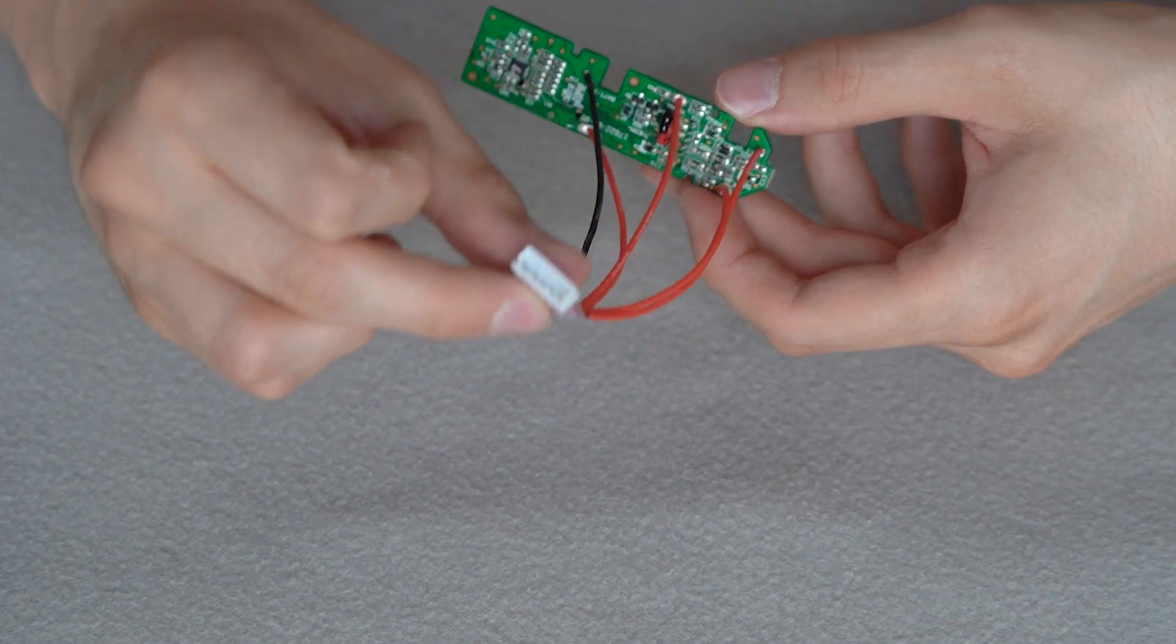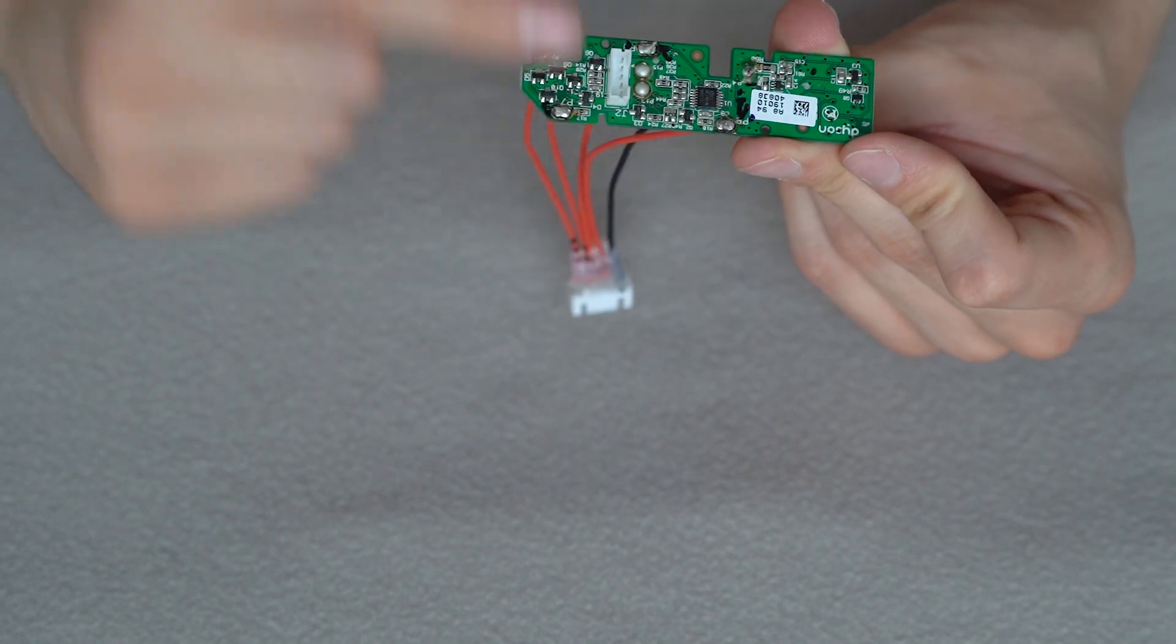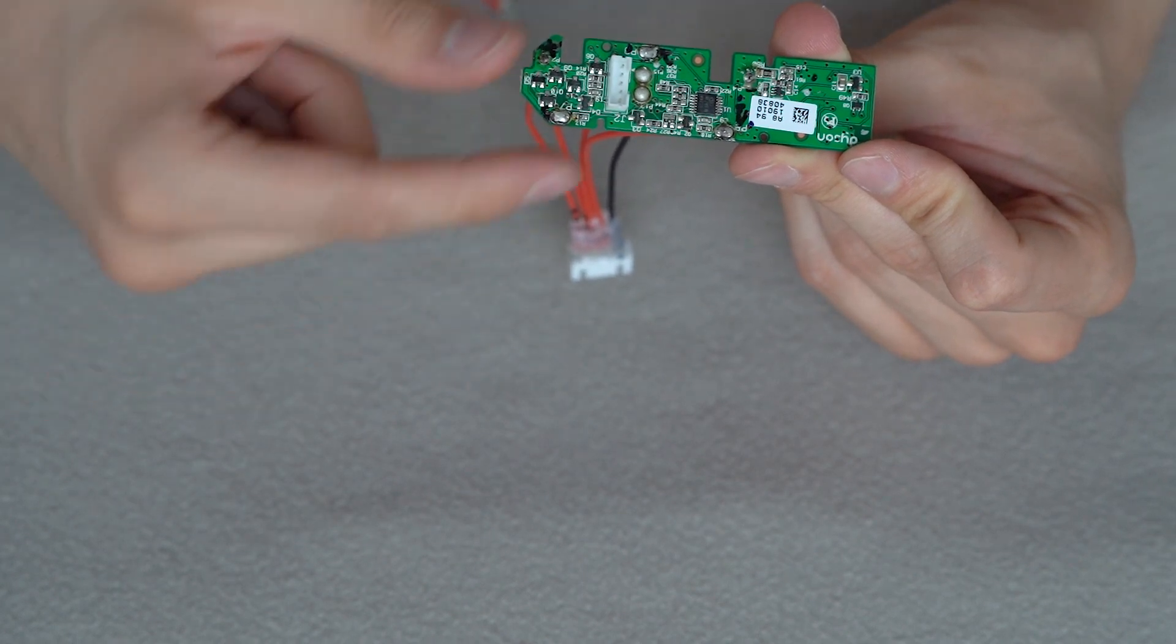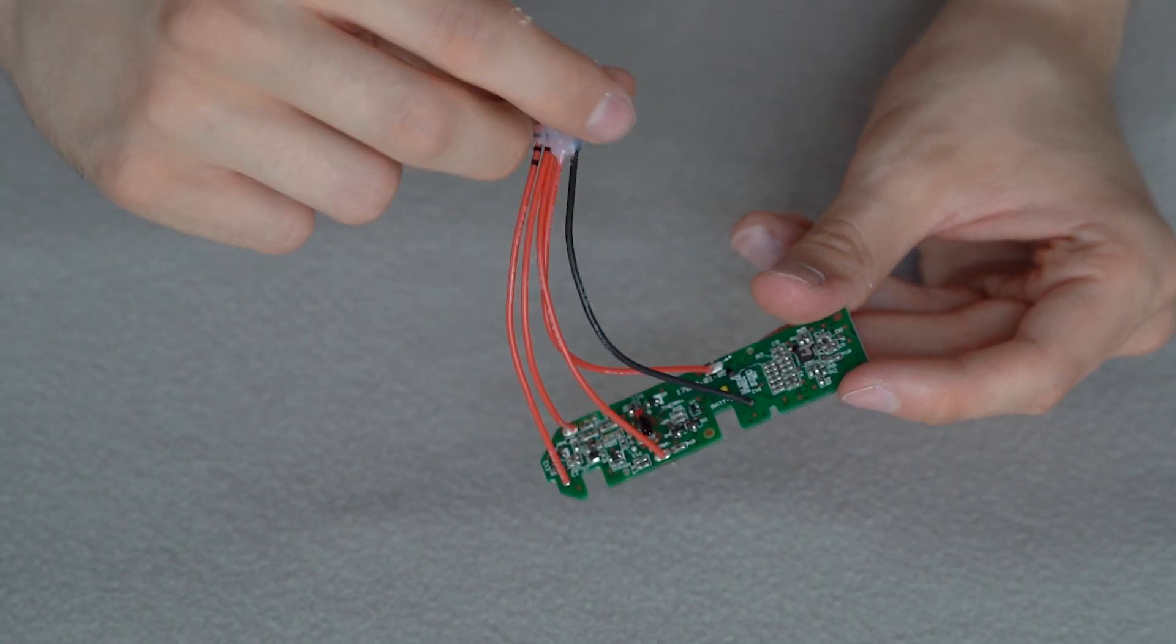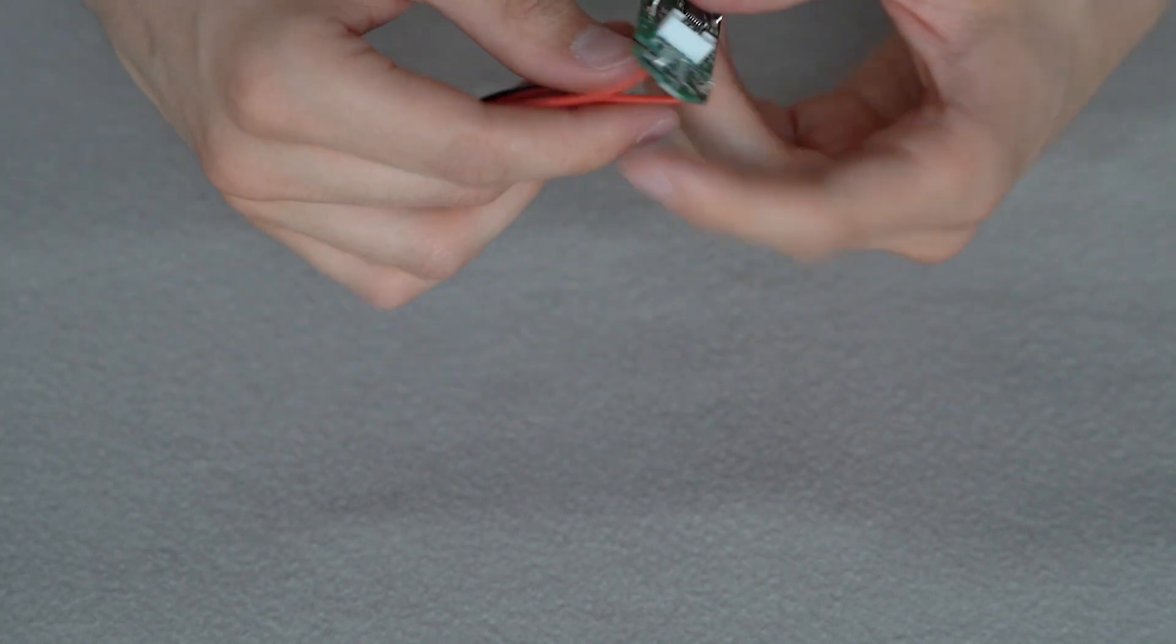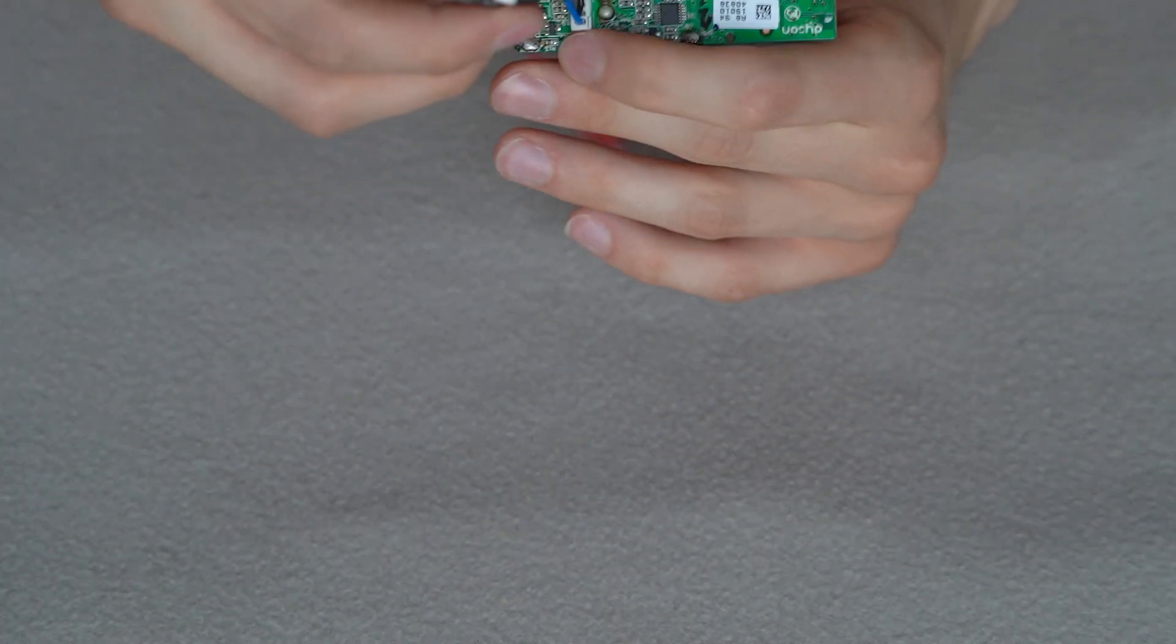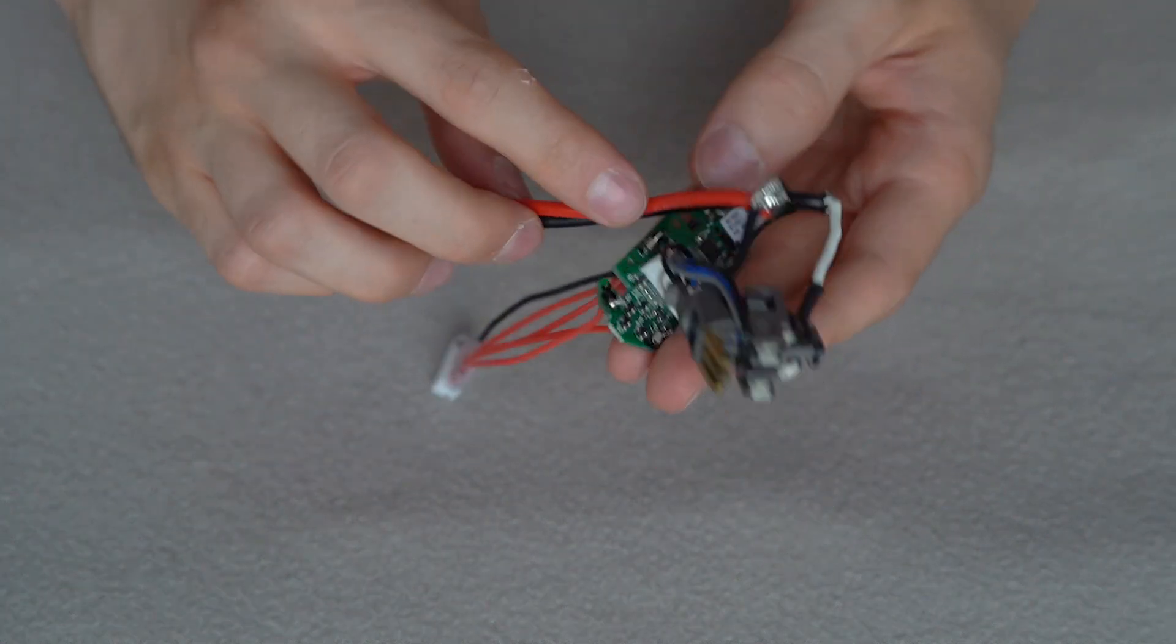So this is the fourth cell, third cell, second cell, first cell and minus. So it's pretty simple to reverse engineer this and you can just follow the polarity of the original cells in order to solder this. And this is how it looks now and what we will do now is just put this connector back into its place and this basically is our modification. Let me just try to put this thing nicely back and I will show you what we will do with it.